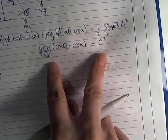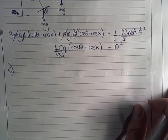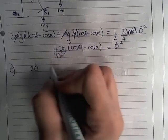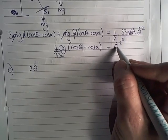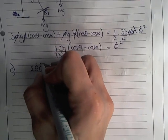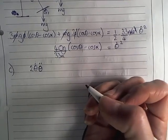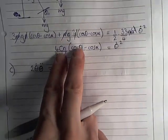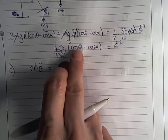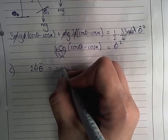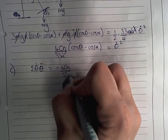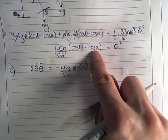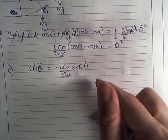So if we differentiate the right hand side, then we get two theta dots. Bringing the power down in front, take one from the power and then multiply by this differentiated with respect to t. So you get a theta double dot that will equal this thing differentiated. So here you end up with, now cos differentiates to negative sine. So you end up with negative 40g over 33a sine theta, theta dot, and cos alpha is a constant, remember, so this bit will just disappear when you differentiate.